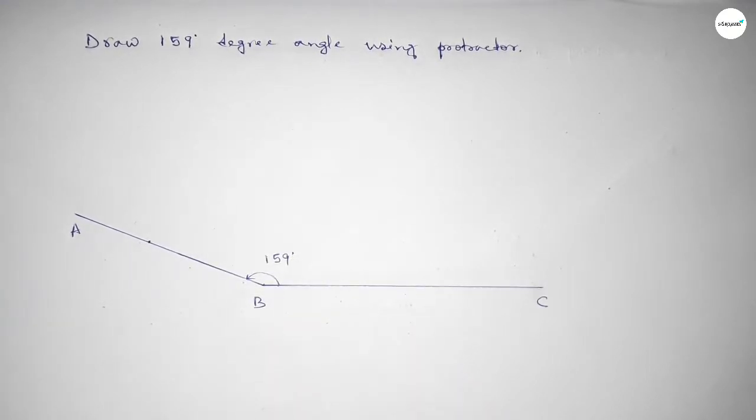Therefore, angle ABC equals 159 degrees. That's all.